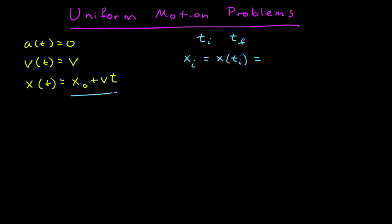Here's the position as a function of time. So that's x naught, our initial position, plus our constant velocity, which we just call v, times t sub i, our initial time. Our final position is the same thing — our position function evaluated at the final time — which is the initial position plus the constant velocity times the final time.